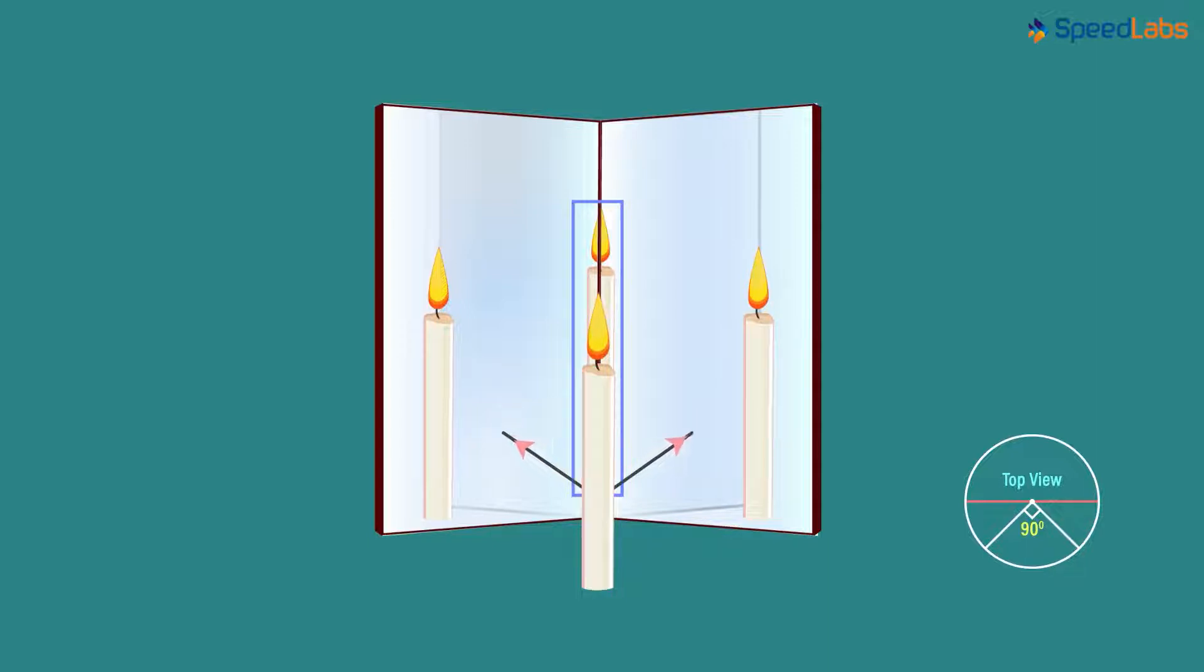The light rays from the candle when incident on the two mirrors get reflected to form this. That's right! These reflected light rays are incident here and form something that looks like one image. But is it one image? Not really! This part of the candle is a reflection of this image and this part is a reflection of the other image. But we can consider this to be one composite image or reflection.